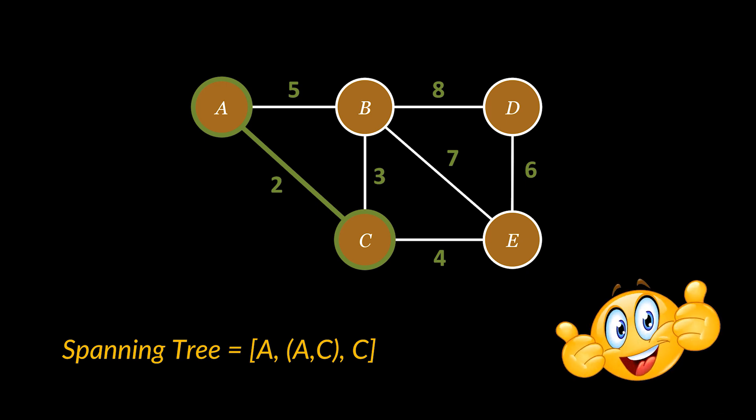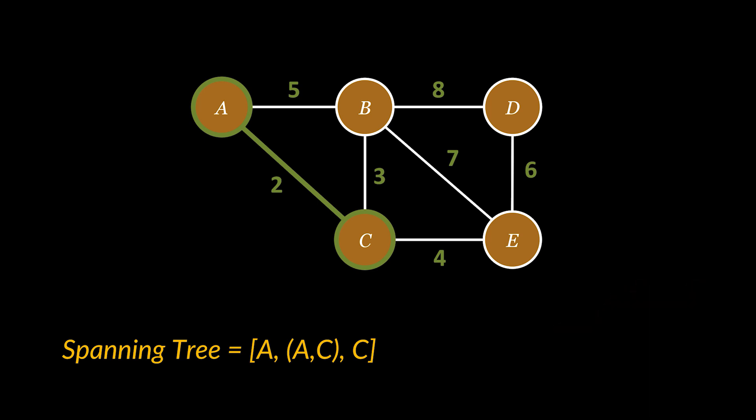Now we repeat what we did again until all the vertices are visited. Meaning given our visited vertices which are now A and C, we check all the edges that are connected to them. Here we have edge AB of weight 5, edge BC of weight 3 and edge CE of weight 4. We add the lowest weighted one alongside its corresponding edge, in this case vertex B, to the tree we are spanning by setting them to visited.